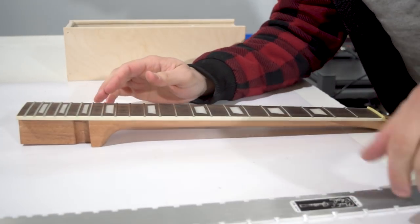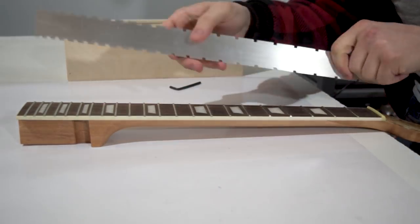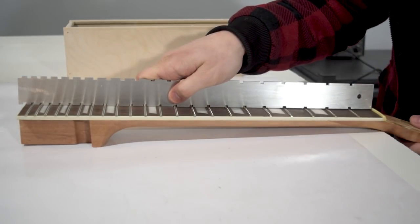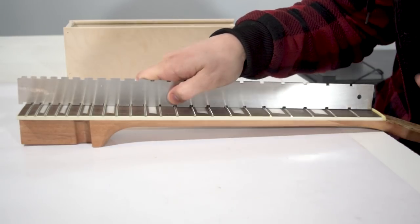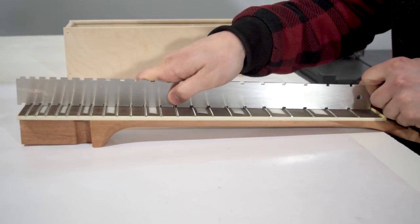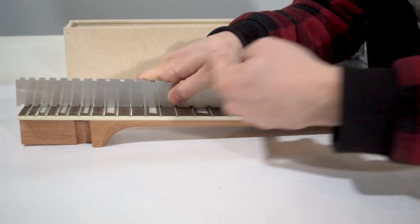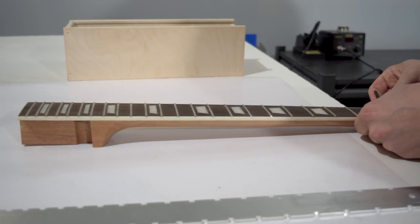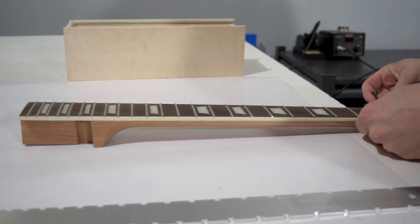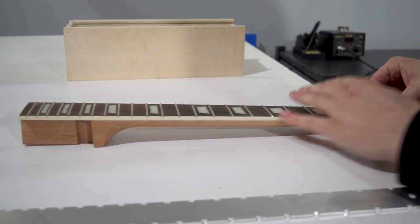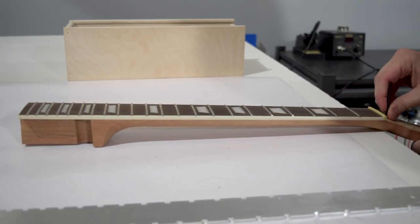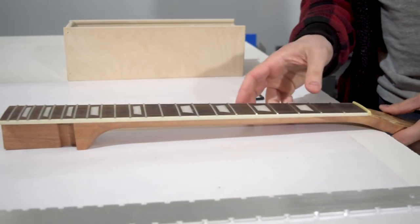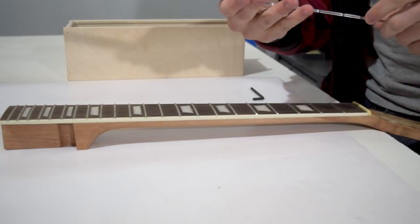And yeah, you can pick up pretty much everything you need for this. So for starters here, we need this neck to be nice and straight. So what we do is take a straight edge, put it on here, make sure you got the right size. And this one isn't quite straight. It's a little bit bowed that way. So we're going to have to loosen off our truss rod slightly.